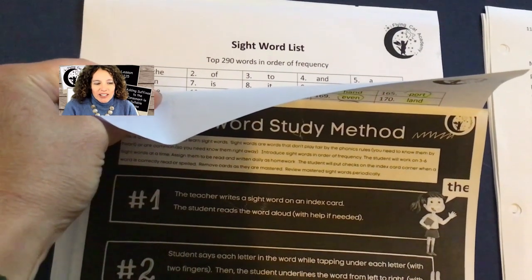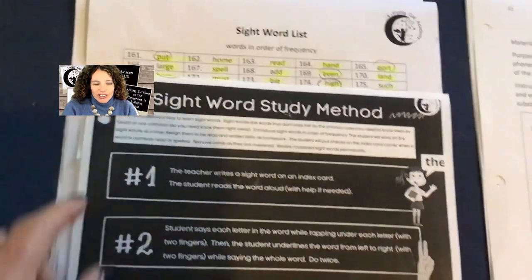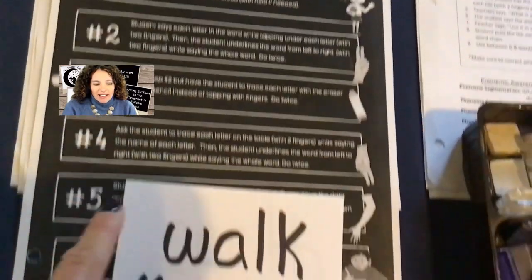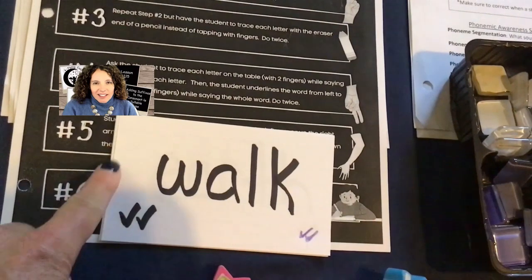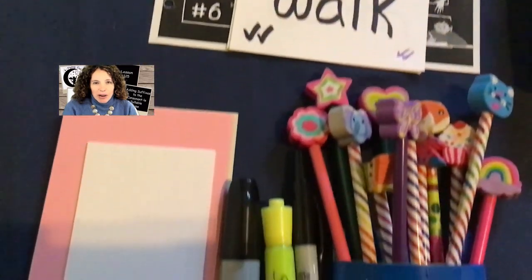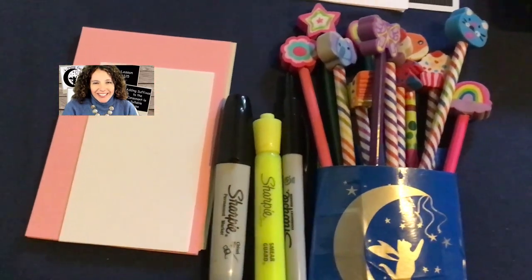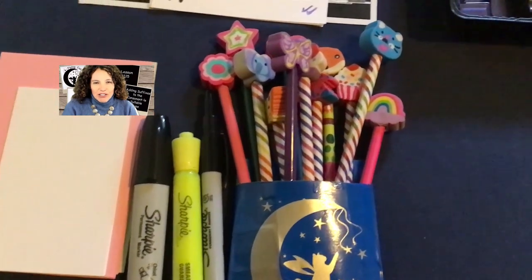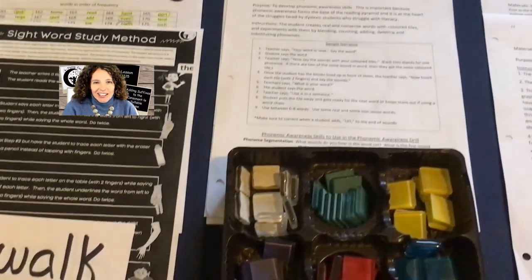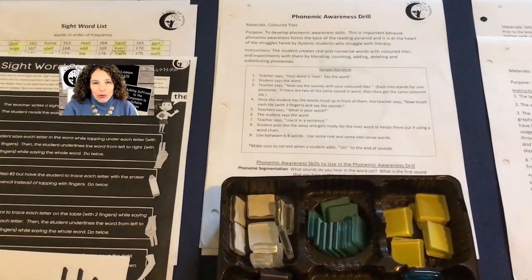You'll need the sight word study method instruction sheet for the teacher and the student's sight word card pack, some blank index cards, a highlighter, markers, and some pencils. For the phonemic awareness drill you'll need the teacher instruction sheet and the colored tiles for the student.